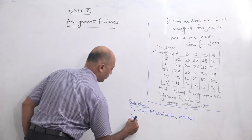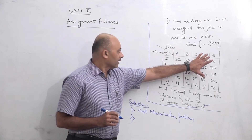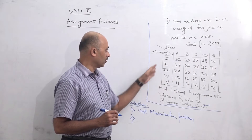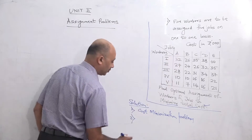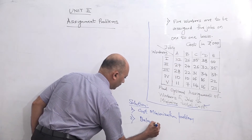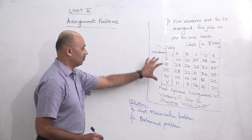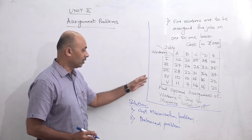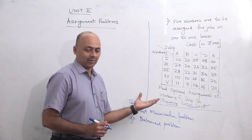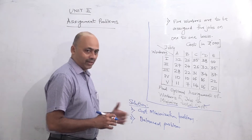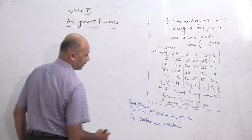Second, we should check if the problem is balanced or unbalanced. There are 5 workers and 5 jobs, so it is a balanced problem. Suppose if you have 5 workers and 4 jobs, then it is called an unbalanced problem. If the problem is unbalanced, then we have to take a dummy for balancing, and all dummy values are created as 0. But this problem is balanced, so it is cost minimization and balanced.